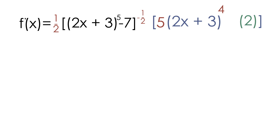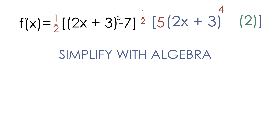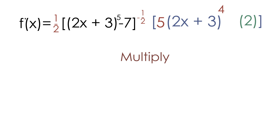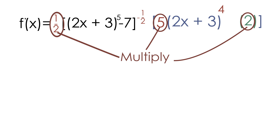Now the only thing we have left to do is a little bit of algebra and simplify as much as possible. One thing we can do is multiply the 2, the 5, and the one-half in the front together. 2 times 5 is equal to 10, and 10 times one-half is equal to 5.